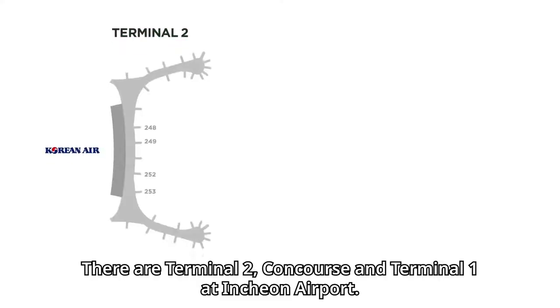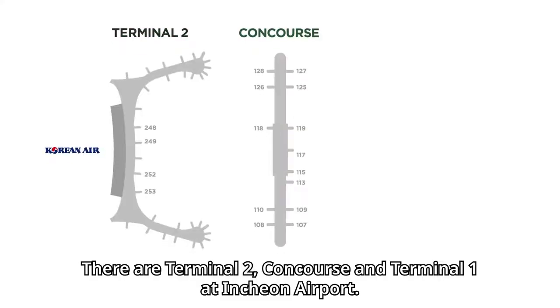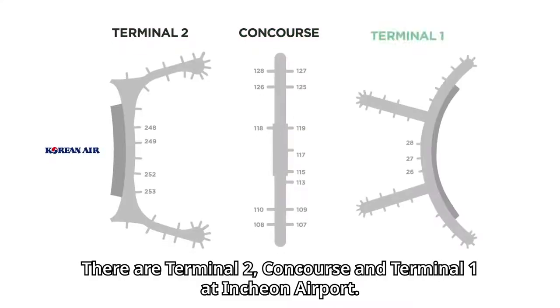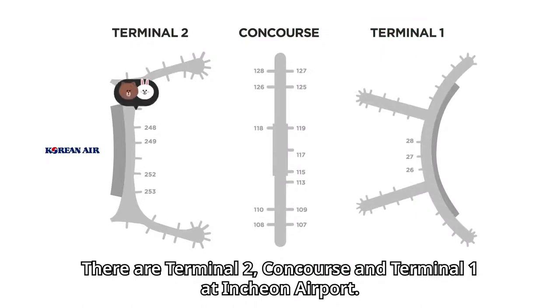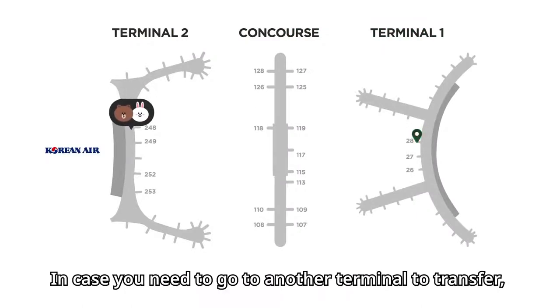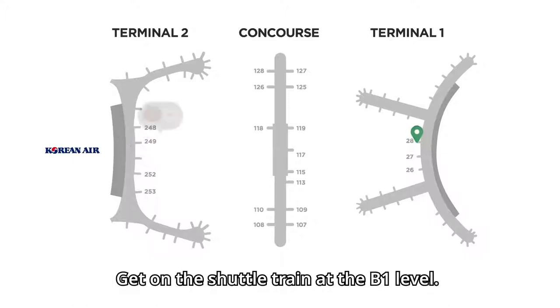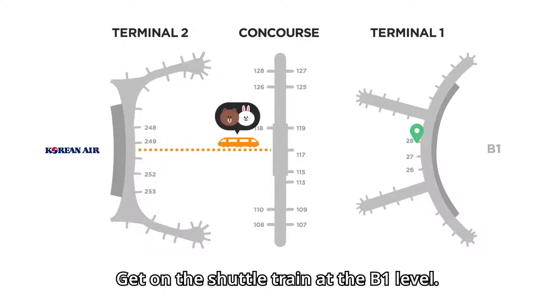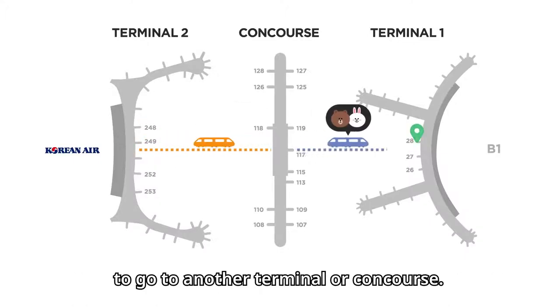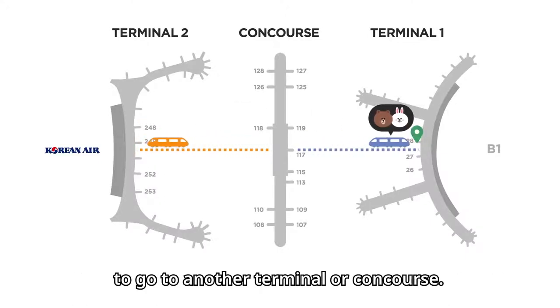There are Terminal 2, Concourse, and Terminal 1 at Incheon Airport. In case you need to go to another terminal to transfer, get on the shuttle train at the B1 level to go to another terminal or concourse.